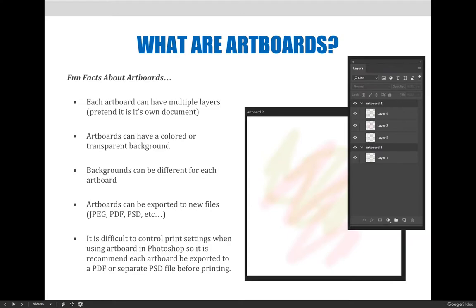Art boards in Photoshop allow users to work on multiple, usually similar, things while keeping them separate — as if they are on different pages. Since Photoshop and Illustrator can't handle multiple-page documents, we use art boards instead. Each art board can have multiple layers, and you can think of them as their own individual documents that you can see at the same time on your workspace. Art boards can also have a colored or transparent background, and backgrounds for each art board can be different.